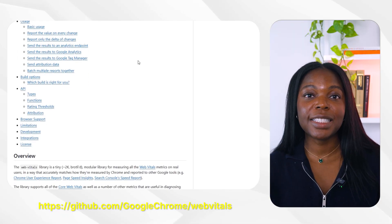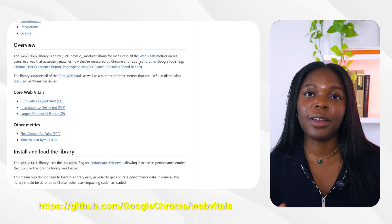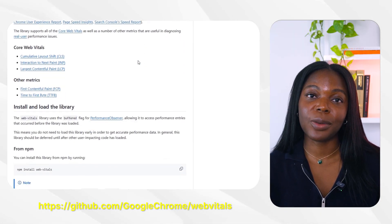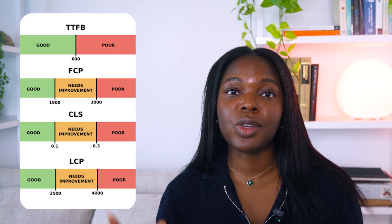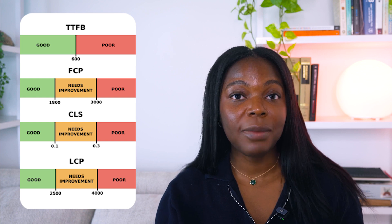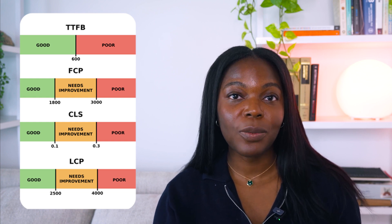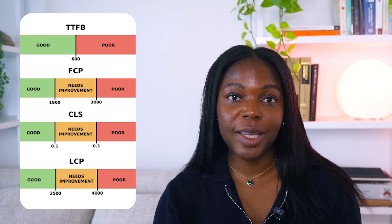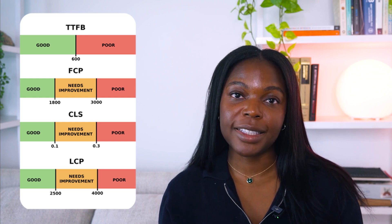Grafana Faro collects these metrics using Google's web vitals JavaScript library, and the metrics are automatically visualized in the out-of-the-box Grafana Frontend Observability dashboard via queries from Grafana Loki. These metrics are color-coded too, so you can quickly detect the performance of each metric. Green means good performance, yellow means needs improvement, and red means poor performance.